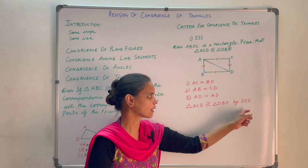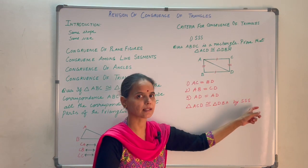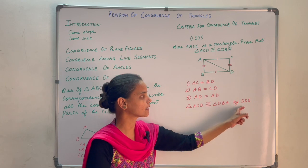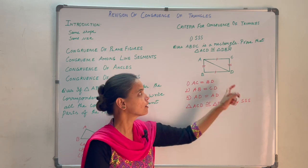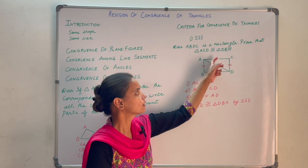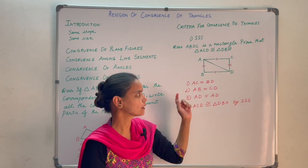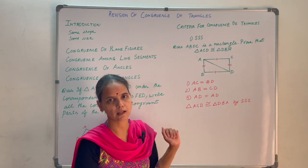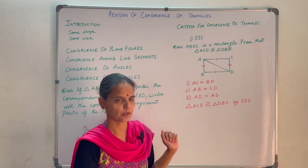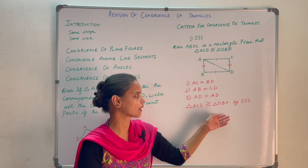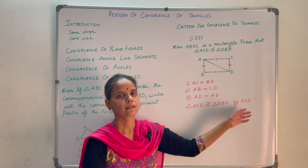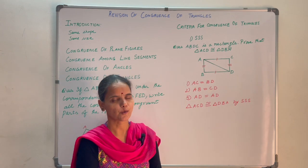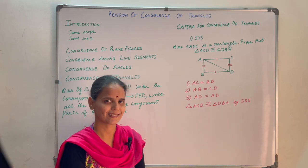SSS means Side, Side, Side. Two triangles are said to be congruent by SSS congruency criteria when all three corresponding sides are equal.